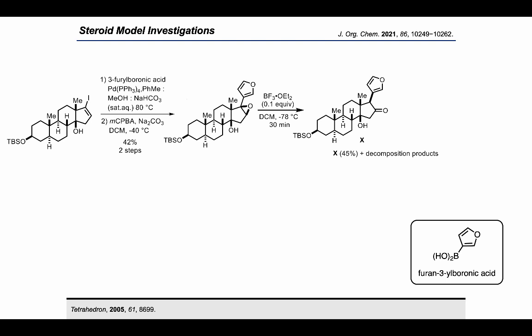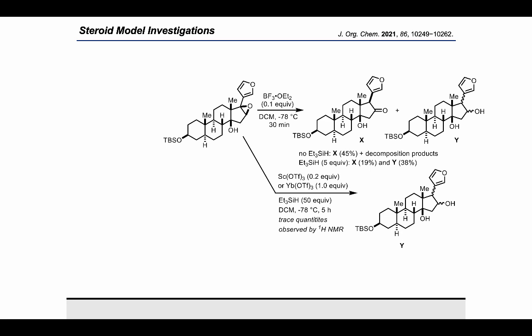Given the inherent instability of the intermediates under Lewis acids, we investigated the possibility of a single-step rearrangement followed by subsequent C16 ketone reduction. The inclusion of triethylsilane as a terminal reductant provided the corresponding reduction product in 38% yield, in addition to the C16 ketone product in 19% yield. However, subsequent attempts to improve the yield by varying the temperature or Lewis acid reagent did not lead to any improvement.